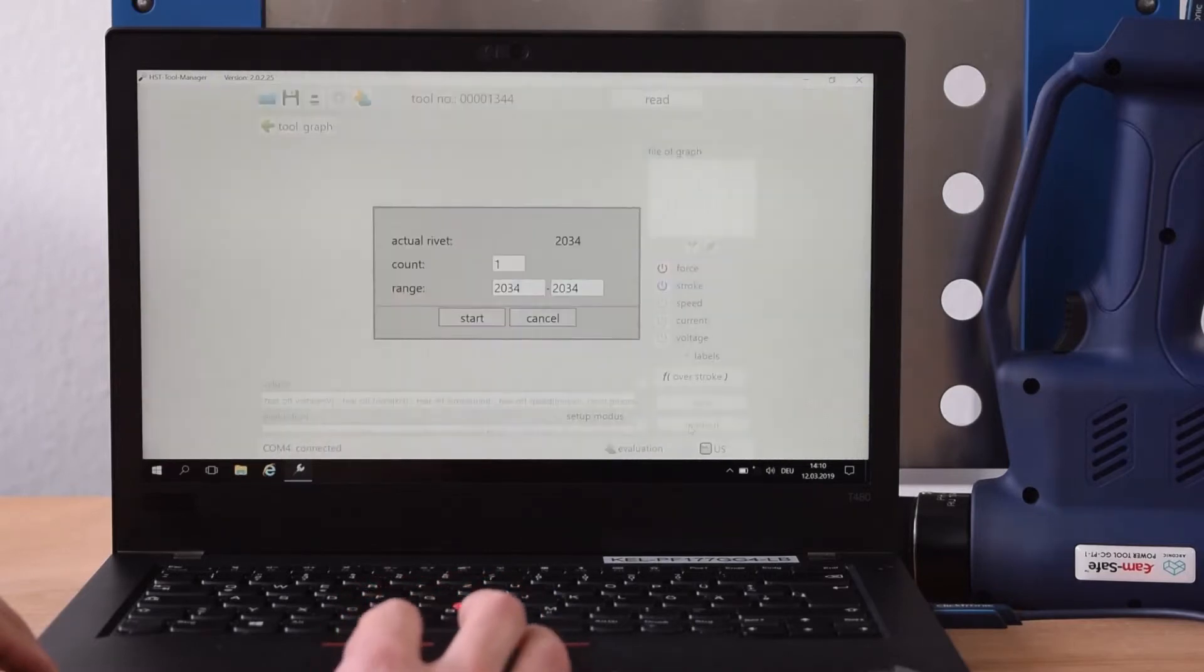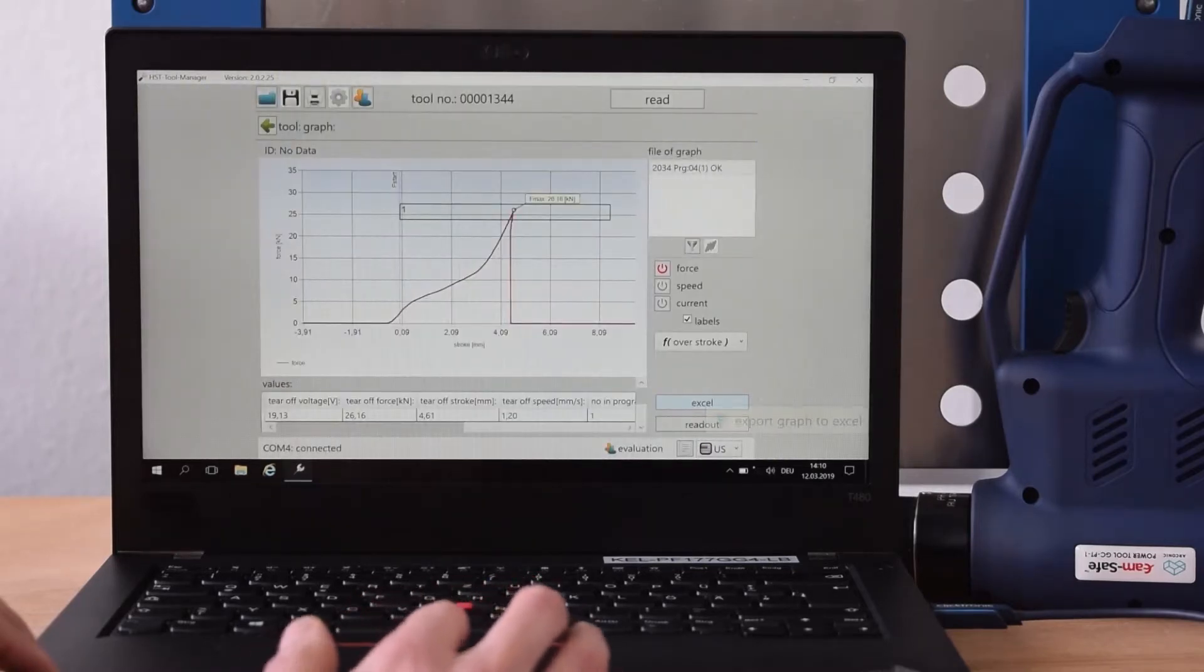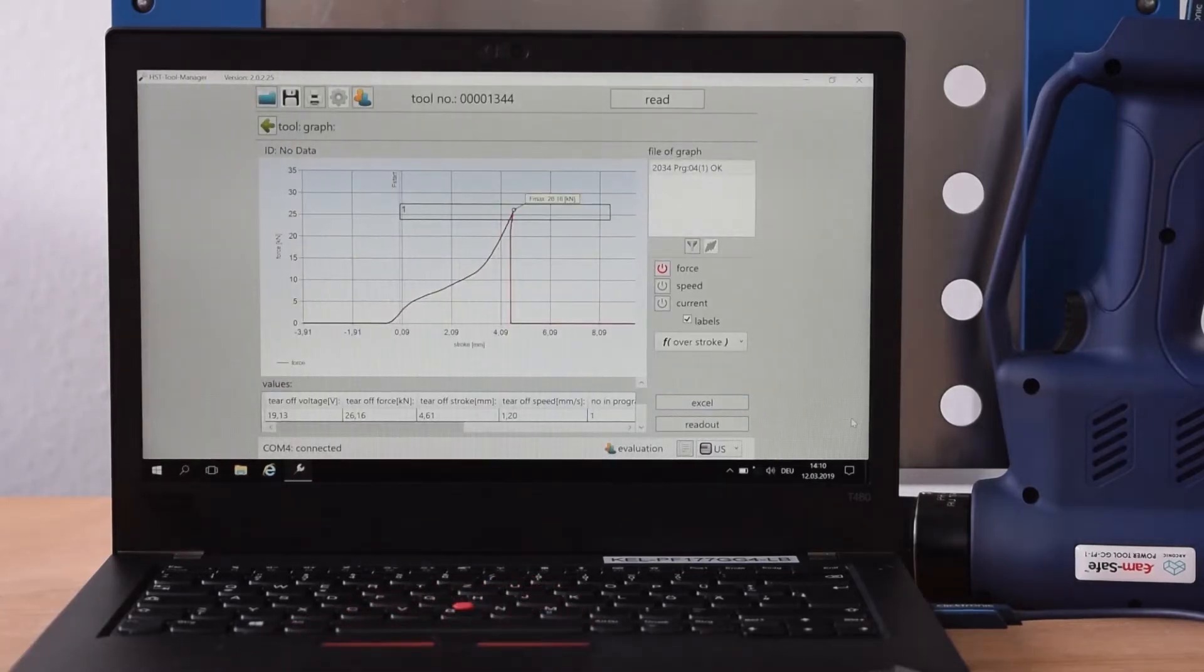Now you can choose your diagram parameters. When pressing Start, you will get your installation curve. You can read out the installation records according to your requirements, for example at the end of each shift or at the end of a defined work batch.